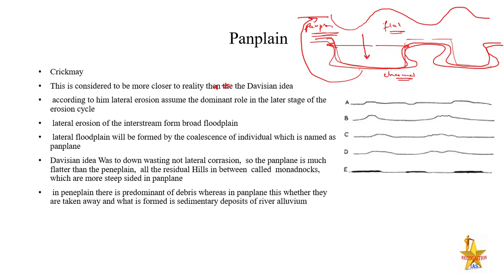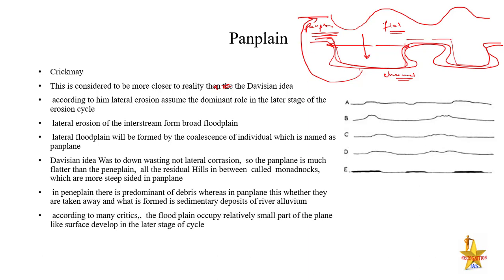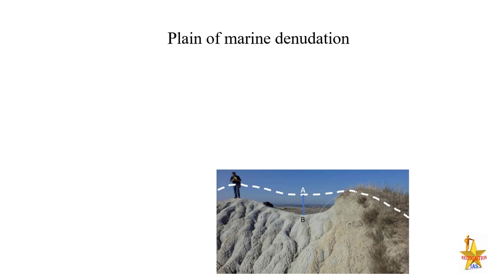In summary: because of lateral erosion, convex-concave surfaces form and ultimately become a flat featureless plain — that is Crickmay's Panplane theory. Critics say the flood plain occupies a relatively small part of the plain, so it cannot be called a separate erosional surface because it is very short in duration and length. But the Panplane is essentially an improved alternative to the Peneplain, differing only in which process is emphasized.